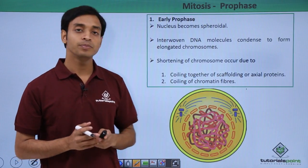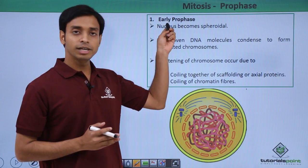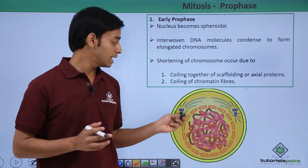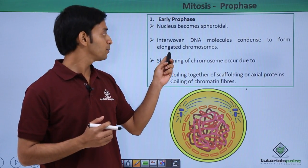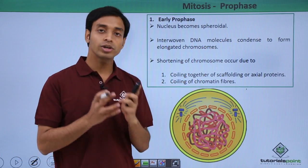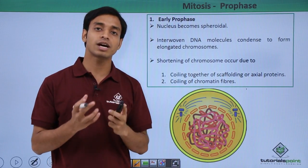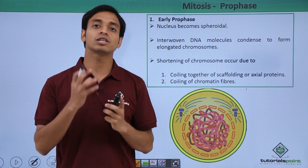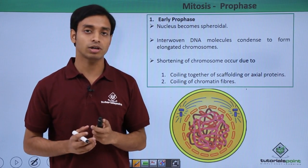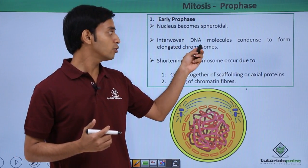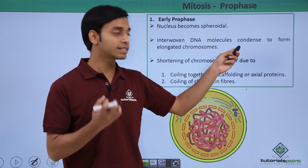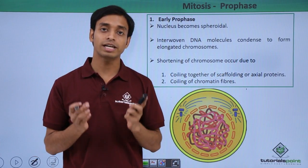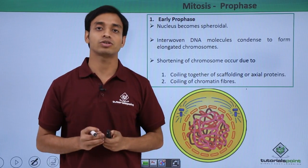First let us start with the early prophase. In the early prophase, the nucleus becomes spheroidal — that means almost a circular structure is being attained by the nucleus. The interwoven DNA molecules condense. Initially, before cell division starts, the DNA molecule remains as a chromatin network with a network-like structure. Slowly these interwoven DNA molecules start condensing; their size decreases to form elongated thin thread-like chromosome structures.